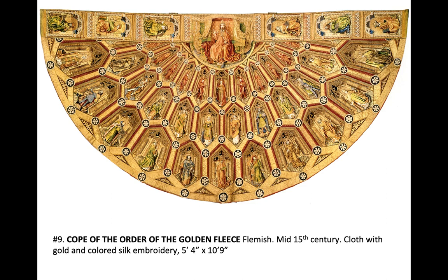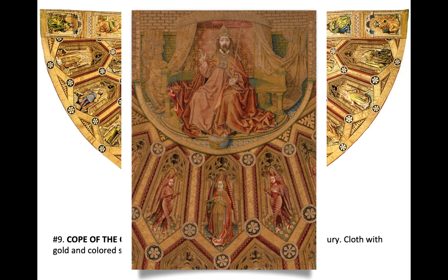The Cope of the Order of the Golden Fleece — the Order of the Golden Fleece was an honorary fraternity founded by Duke Philip the Good of Burgundy, in which 23 knights were chosen for their moral character and bravery. Religious services were integral to the order's meetings, and opulent liturgical objects were created for that purpose. This cope — basically a cloak — is divided into compartments filled with standing figures of saints. The illusionistic effects of Flemish painting are achieved here with gold threads sewn into the surface using unevenly spaced colored silk threads.